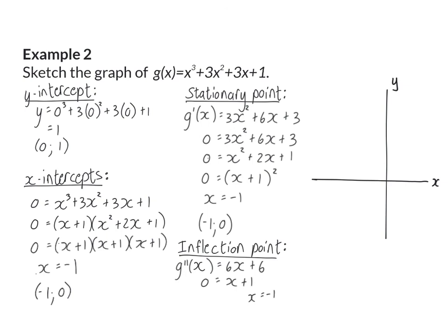When sketching this graph it is important to realize that a is positive, and therefore we're going to start bottom left and move to the top right. In this case we only have two coordinates to indicate — the y-intercept at one and the x-intercept which is also the stationary inflection point at minus one. Drawing the graph from bottom left, going through the inflection point and the y-intercept, ending in the top right corner.